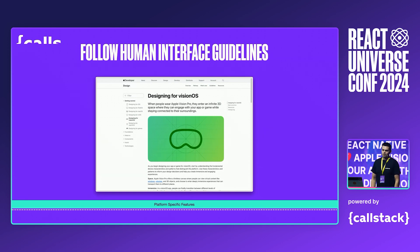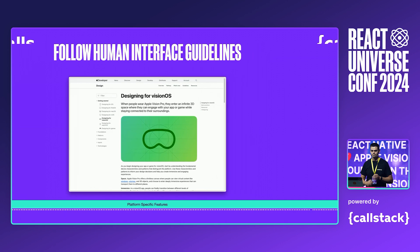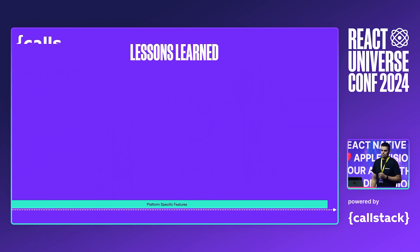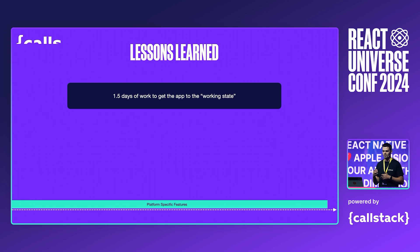While working on migrating your app to Vision OS, remember to take into account the human interface guidelines from Apple. It's a set of rules that will make your app a lot better on this platform. Lessons learned: overall, it took one and a half days to get the app to the working state. It still requires more work, like adding a few missing dependencies and fixing some commented-out code.